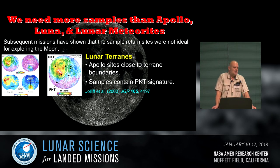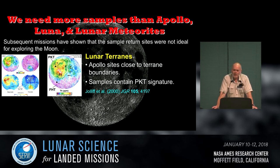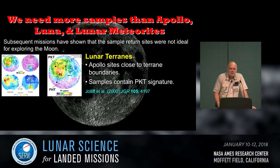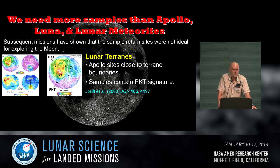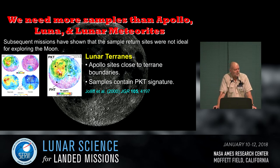What we have already learned since Apollo is that we need to go back. We now have global datasets that have opened up this idea of lunar terrains — coming up on 18 years since the publication of this paper back in 2000 from Brad Jolliffe and co-authors — that we do have these very distinct, compositionally distinct terrains present on the Moon. The Apollo landing sites were pretty much straddling the boundary of the Procellarum KREEP Terrain and were dominated by those materials.